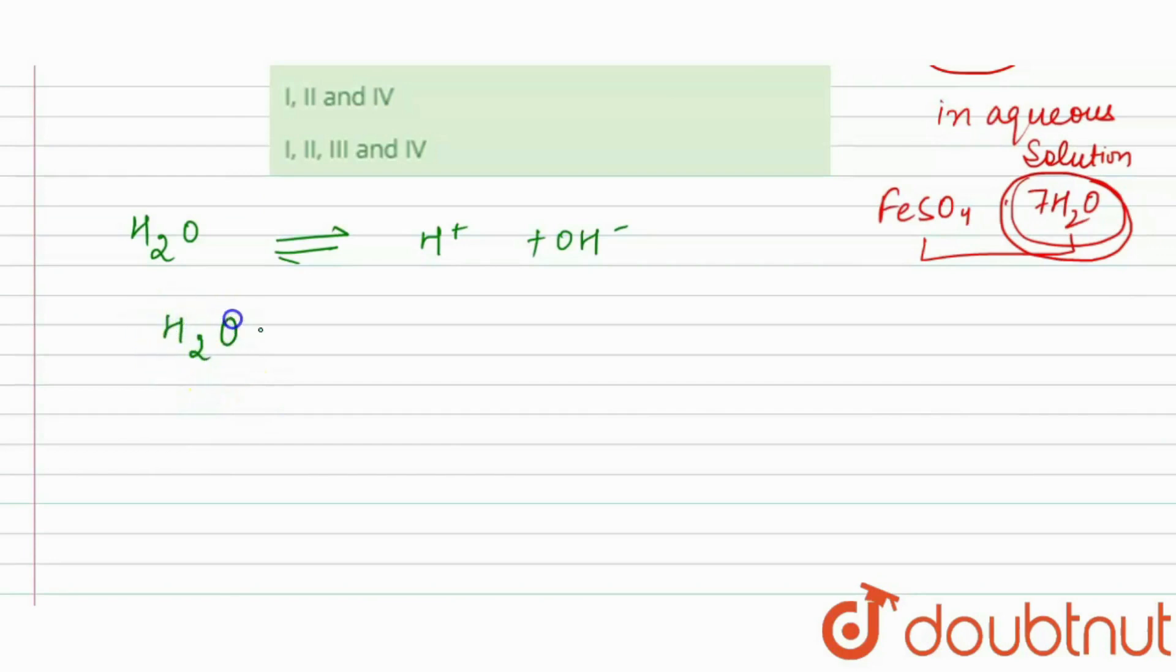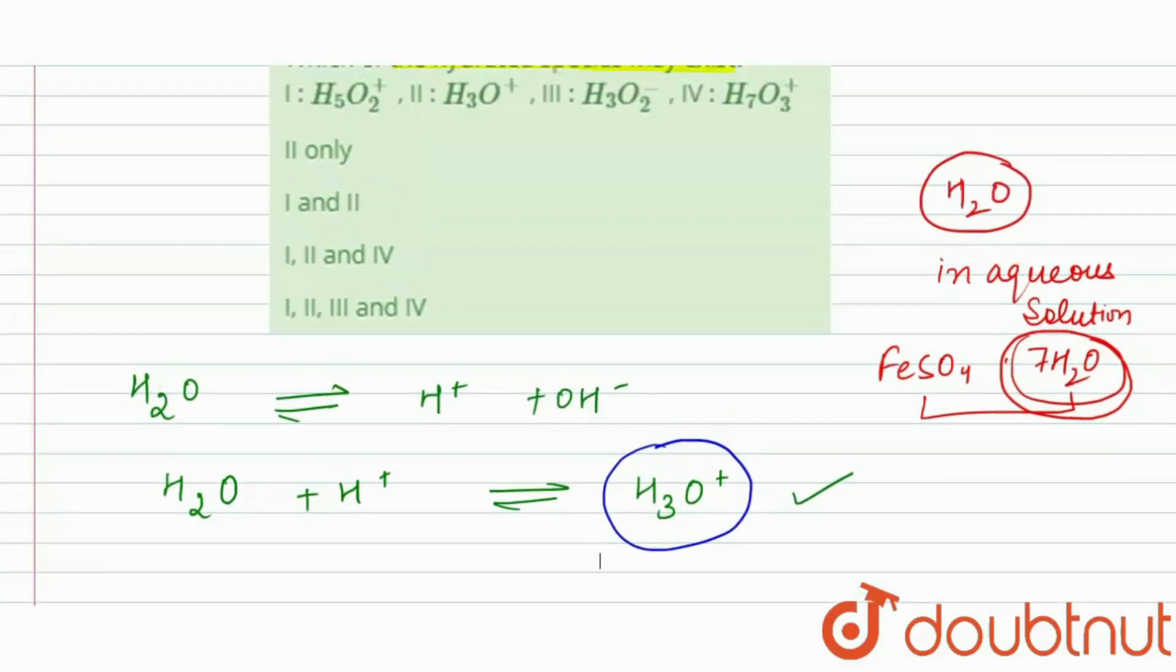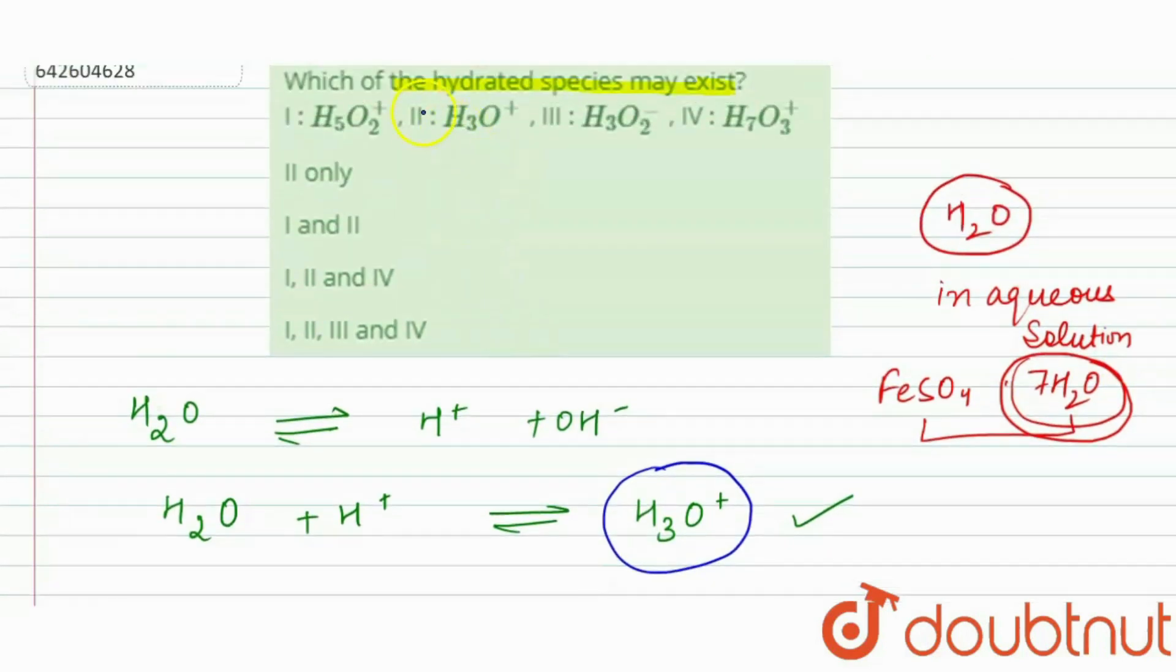When H2O will combine with H positive ions, it forms H3O positive. It means it is a hydrated species. So H3O positive is our first hydrated species. So here we have H3O positive, so our second option is correct.